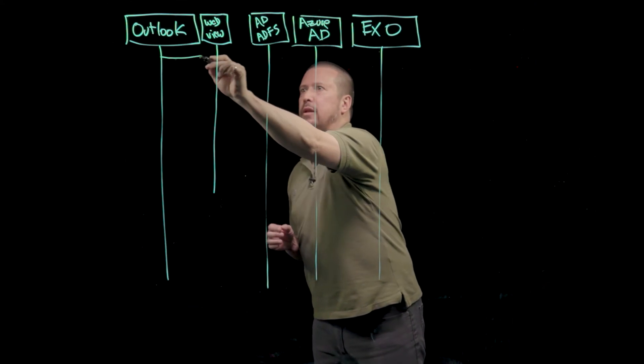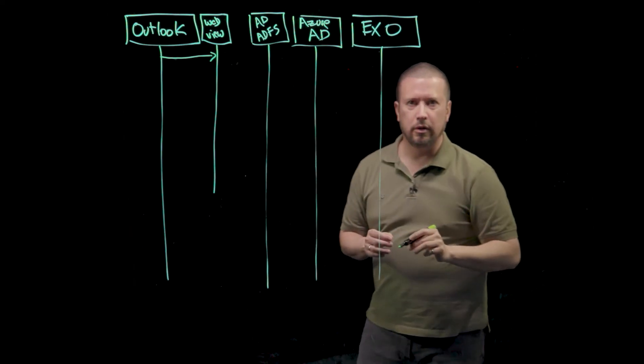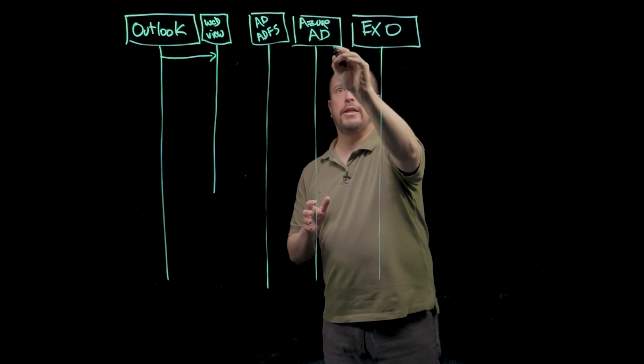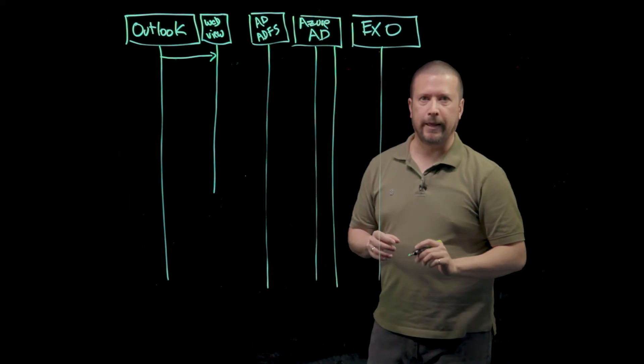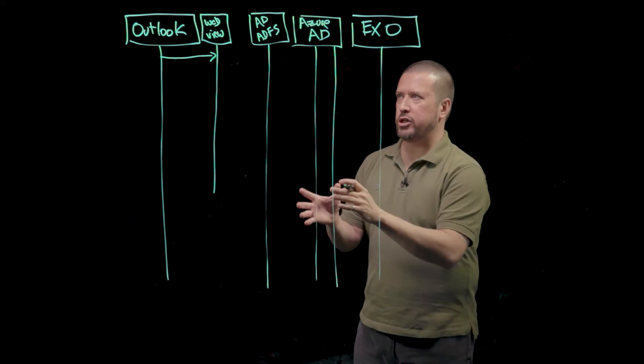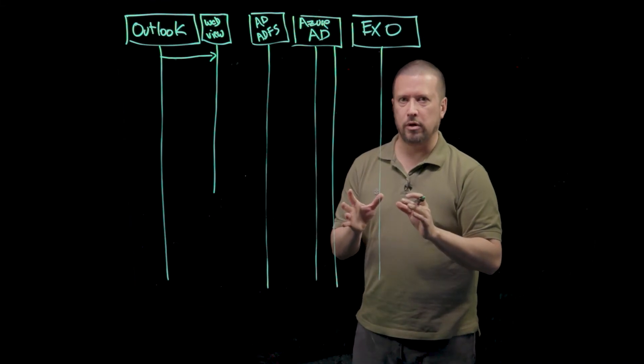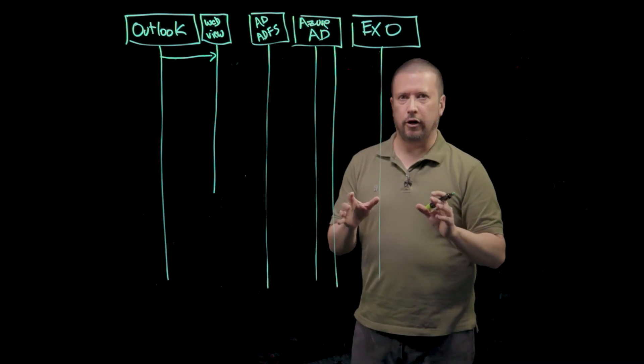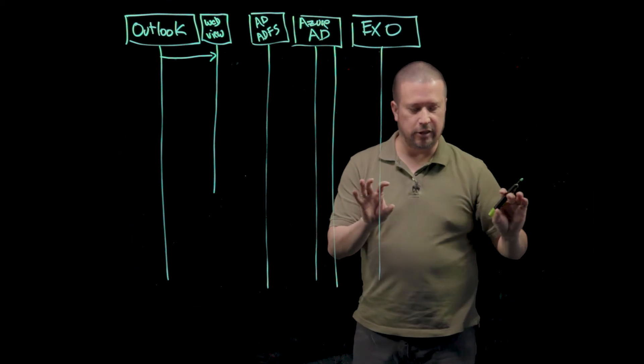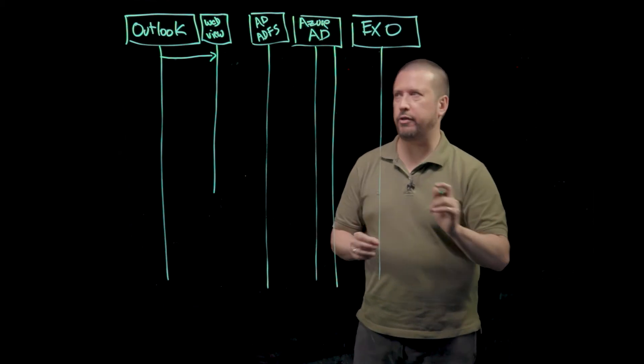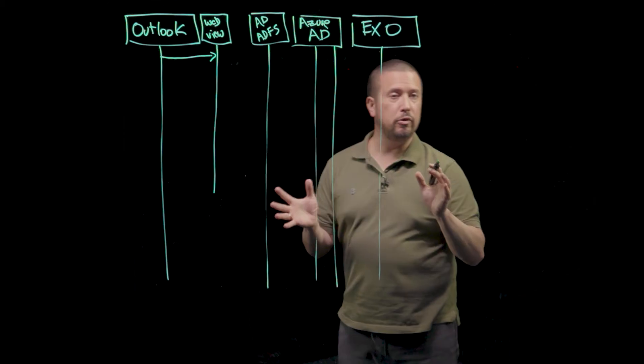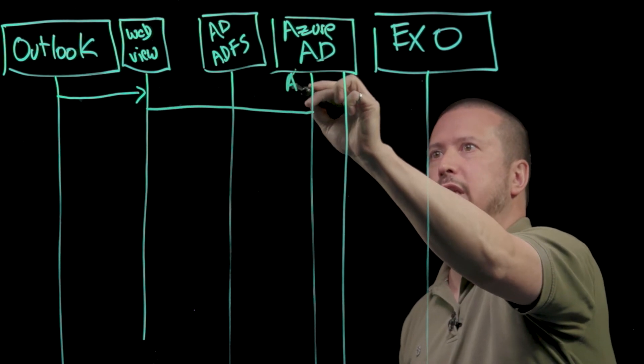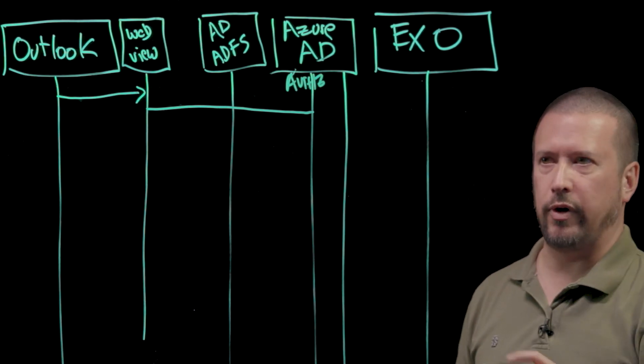And Outlook is going to open this system WebView and then it's going to navigate it to Azure Active Directory. There's actually two lines that I need to have drawn here for Azure Active Directory. It's going to navigate to Azure Active Directory and issue what's called an OAuth2 authorization code request. And again, that's just doing a get on a URL that has in its query string parameters the parameters of the OAuth2 request. So that is going to be a navigation to what's called the authorization endpoint of Azure Active Directory.